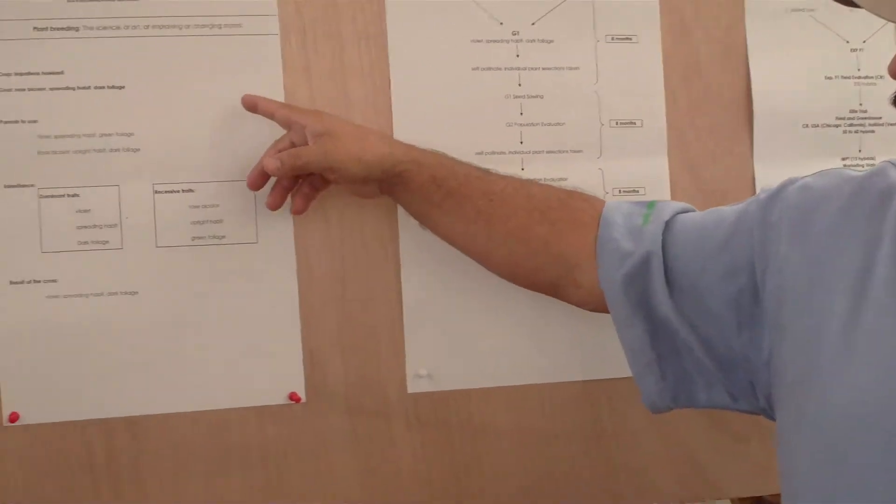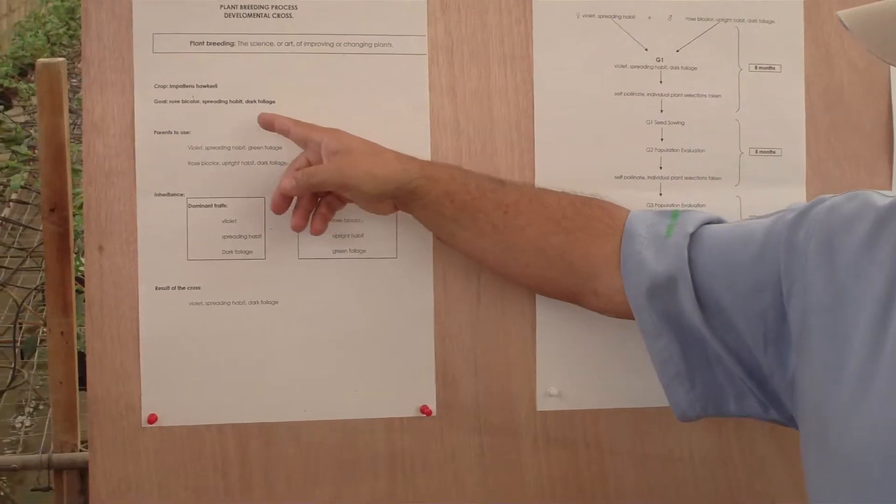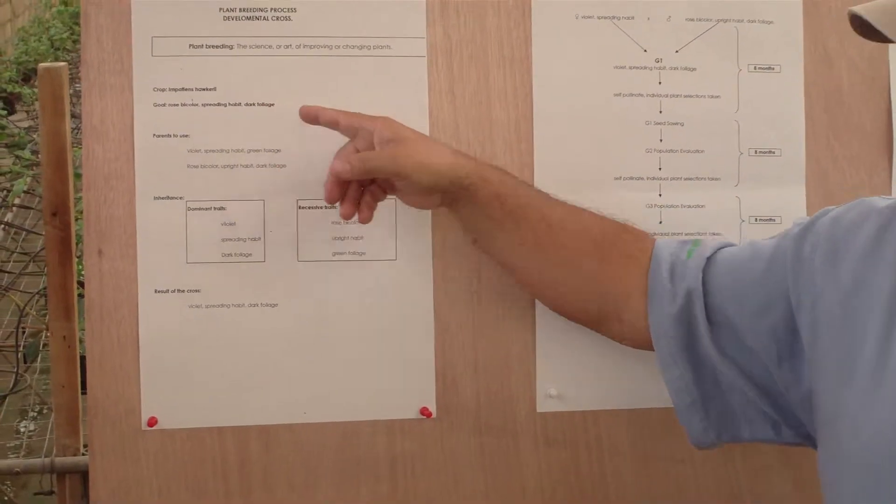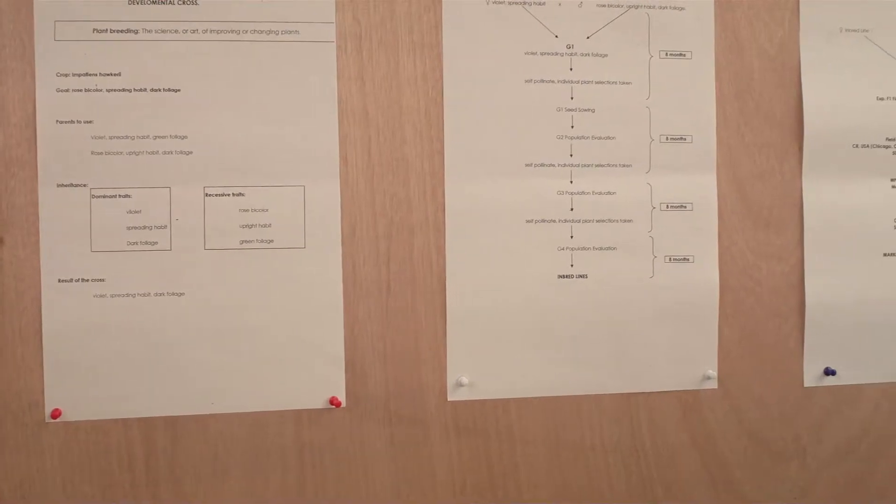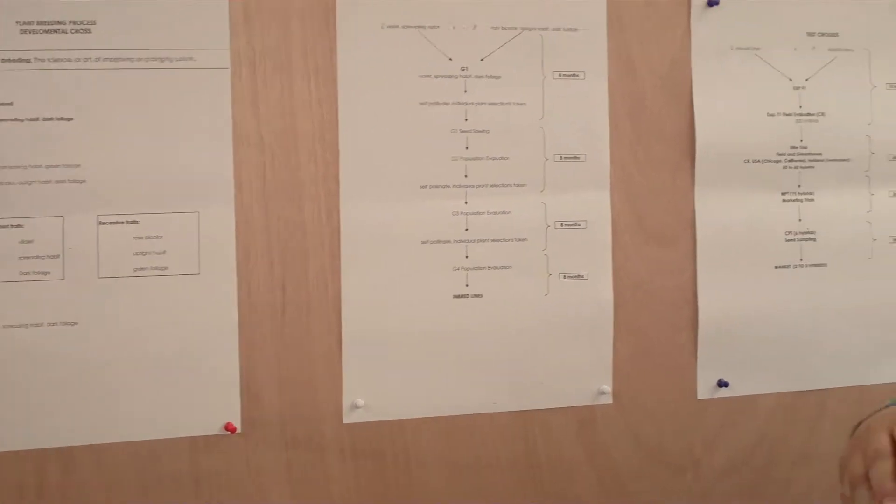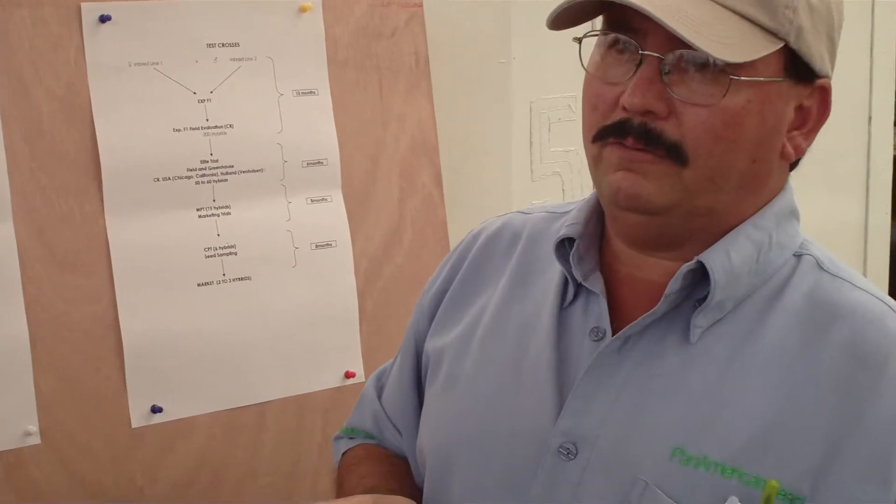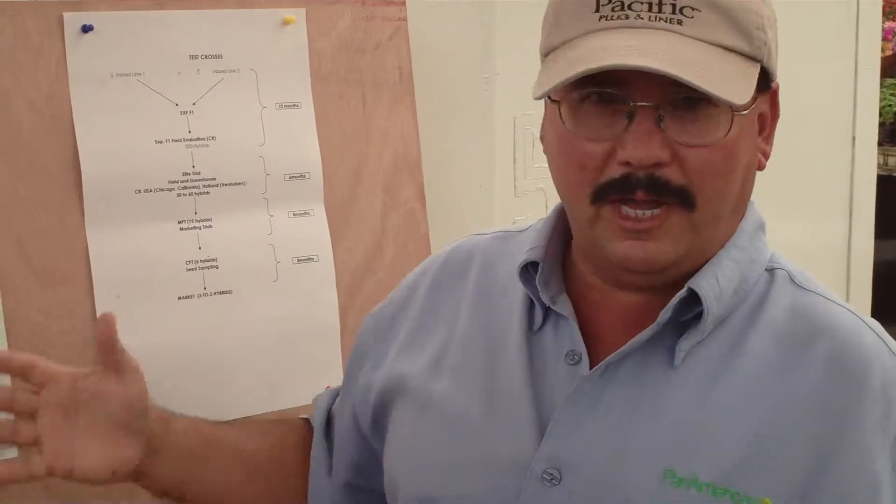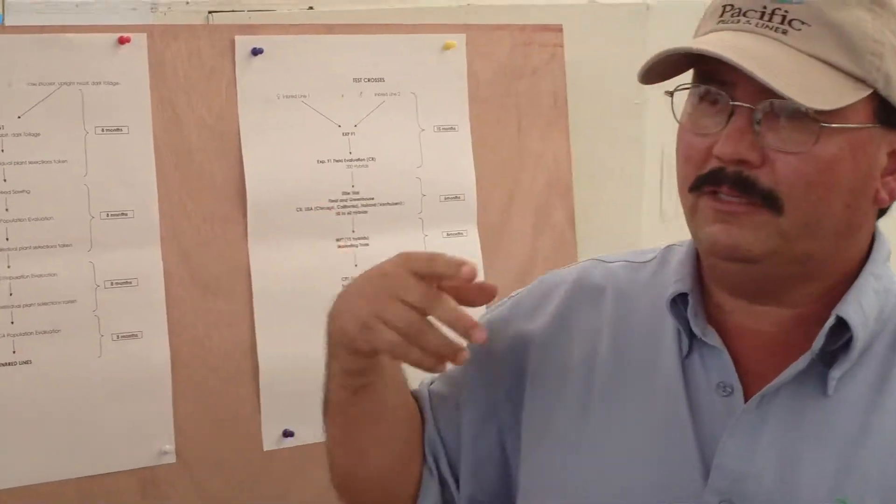And test cross is making crosses with the embryo lines made in this process. For example, just to give you an idea, here I am thinking about having a product in New Guinea that is going to be a rose bicolor flower with a spreading habit like wave and dark foliage. So I have to think immediately about developing embryo lines with different traits that once you combine them can give you this product.